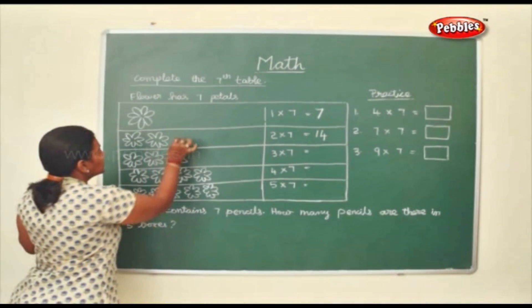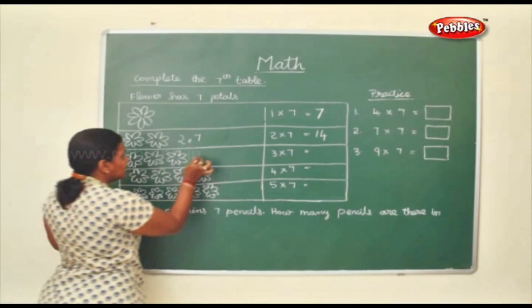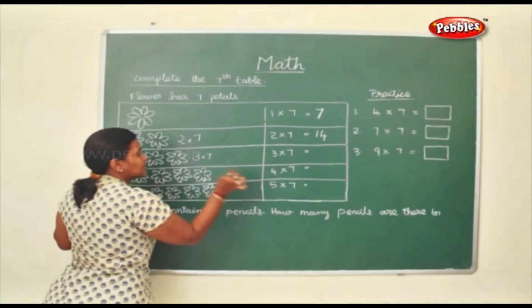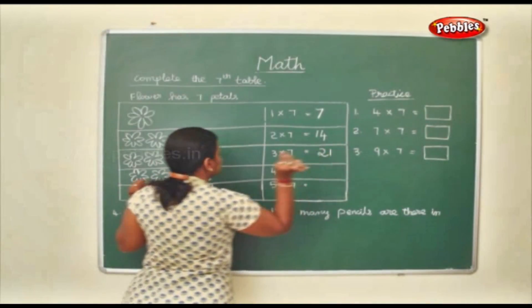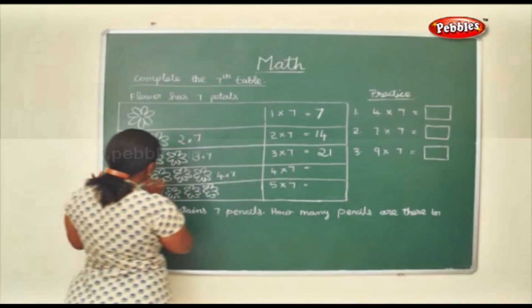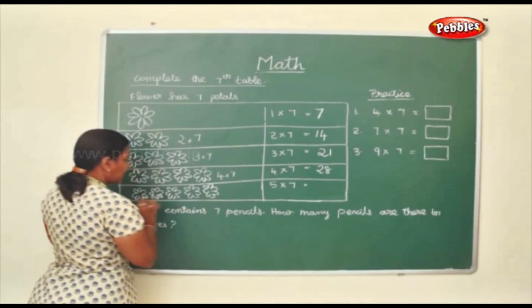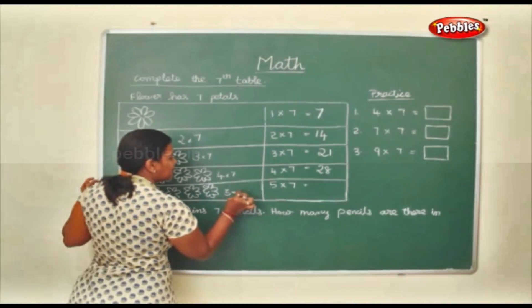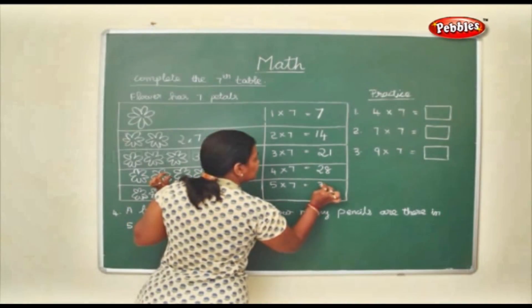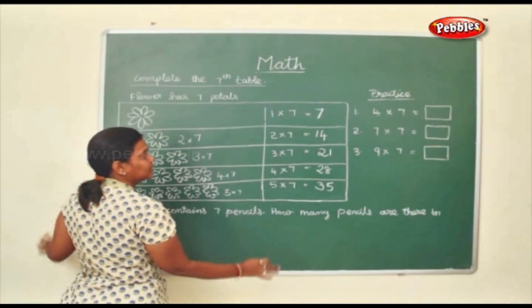2 flowers into 7 petals. Here the same thing. 3 flowers into 7 petals. It have 21 petals together. Here 4 flowers into 7 petals which will give you 28. 5 flowers into 7 petals which will give you 35. This is how you complete your 7th table.